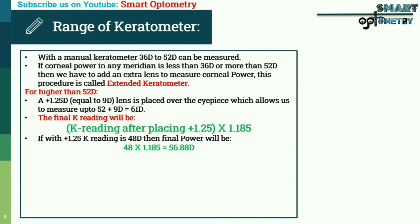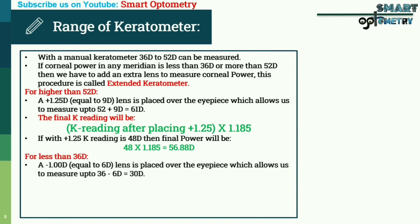So, after placing the plus 1.25 diopter lens, our keratometer reading was 48 diopters, but the actual corneal power is 56.88 diopters. For less than 36 diopters, a minus 1 diopter lens — which is equal to 6 diopters — is placed over the eyepiece, which allows us to measure down to 36 minus 6, equal to 13 diopters.